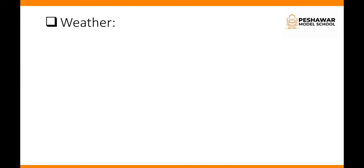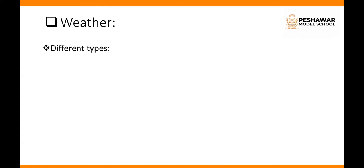Weather is a short-term state of the atmosphere at a specific time and place. Weather changes from day to day. There are different kinds of weather.